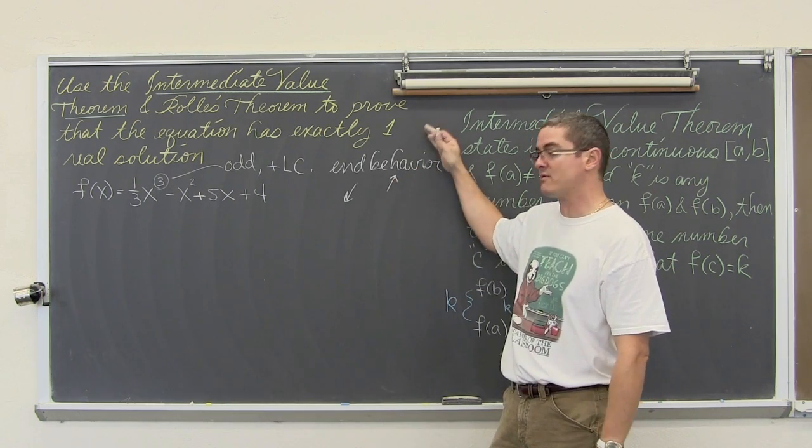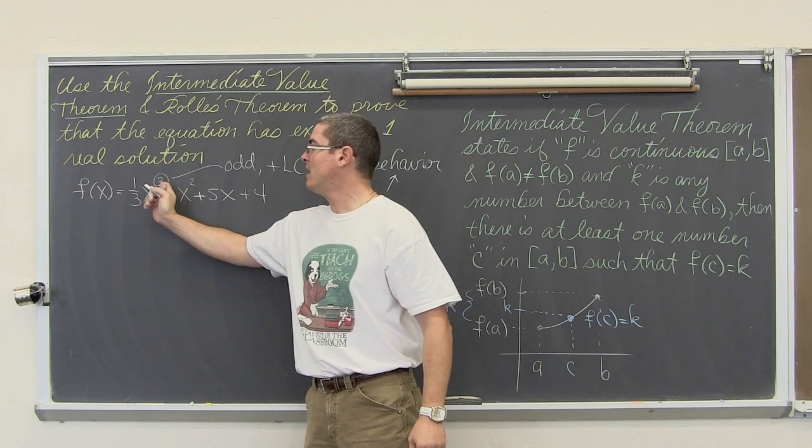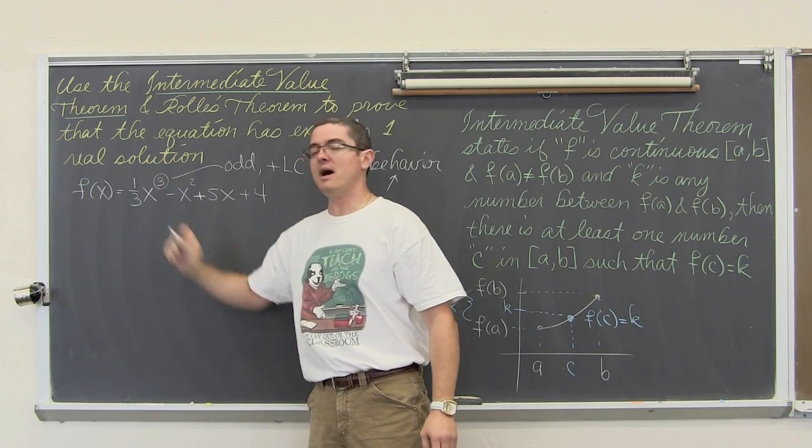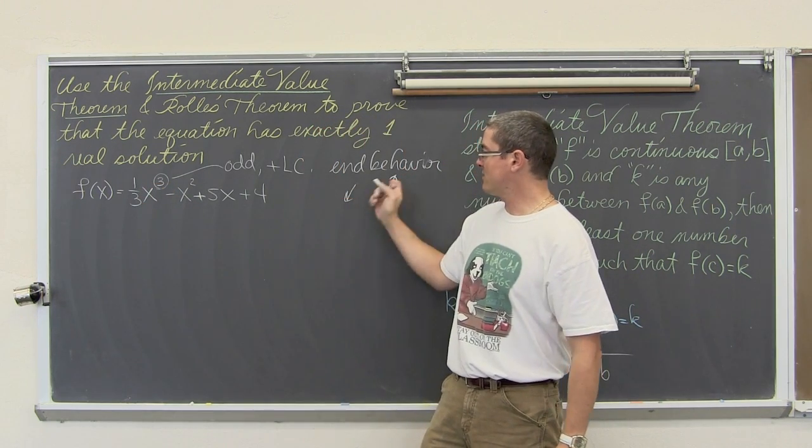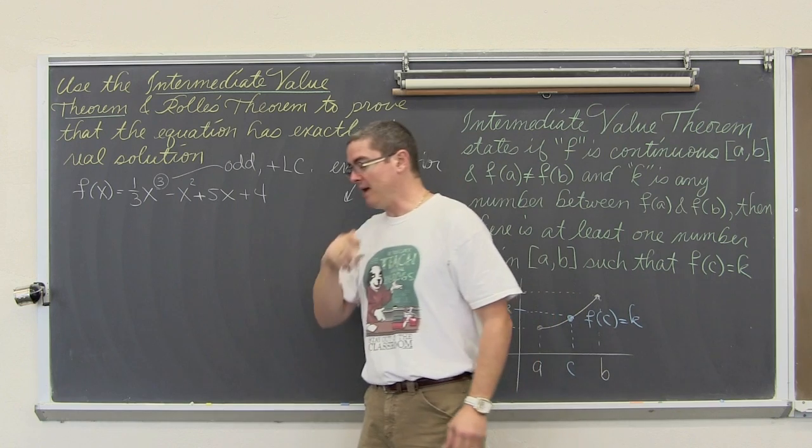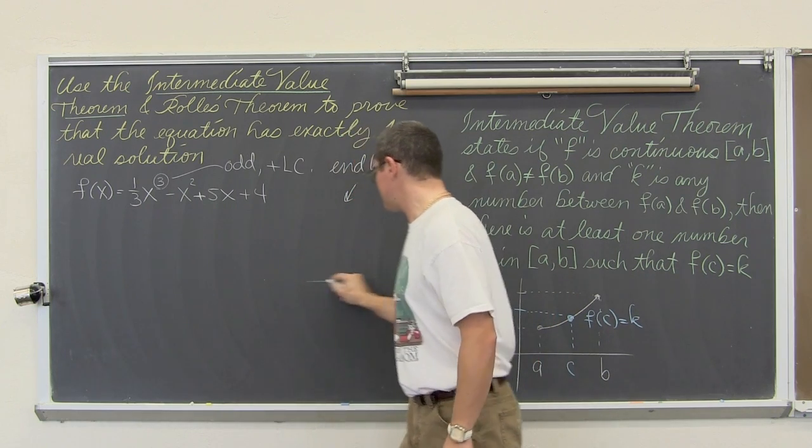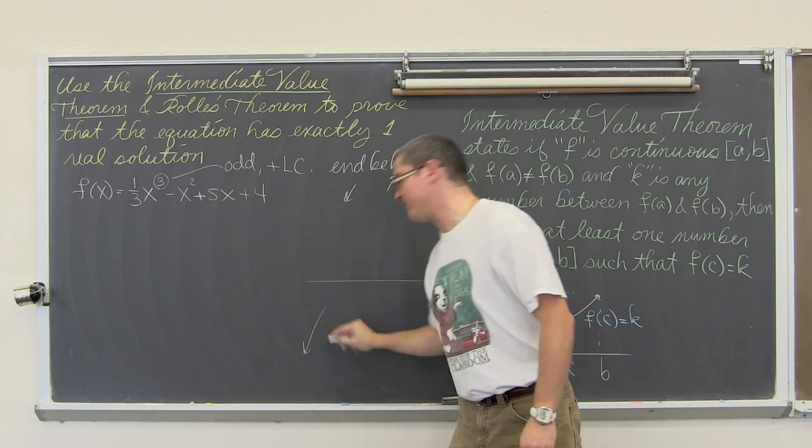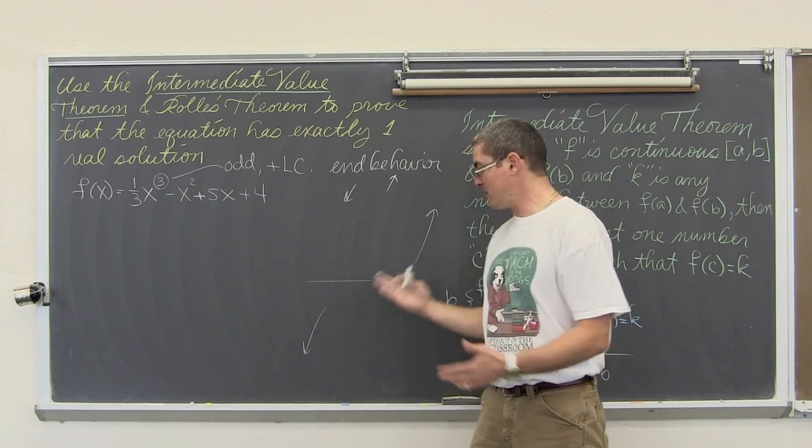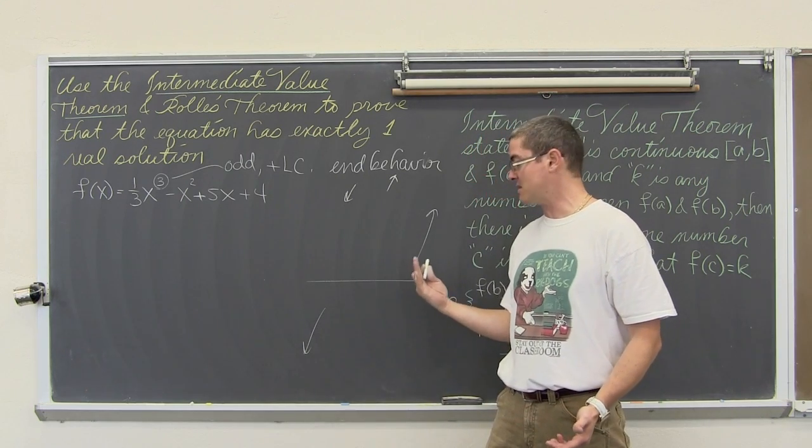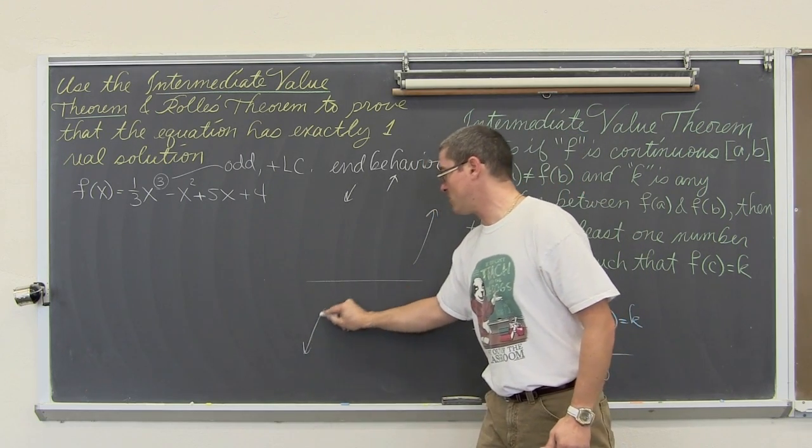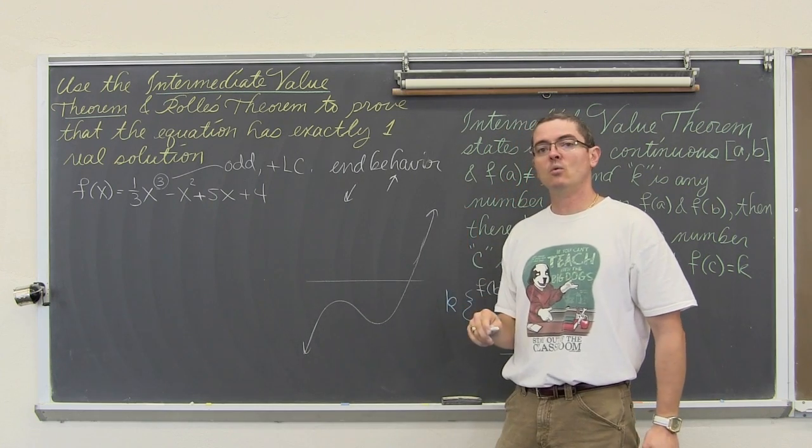The f of x values are going to go to positive infinity. So that is end behavior from an odd degree and a positive leading coefficient. It is down to the left and up to the right. Well, if the graph goes down to the left forever and then up to the right, then somewhere in the middle it has to cross the x axis.